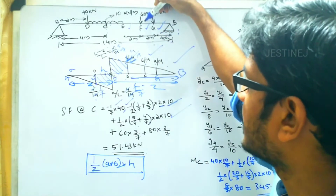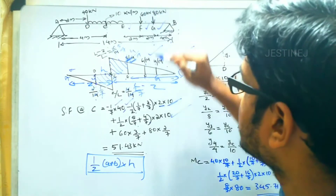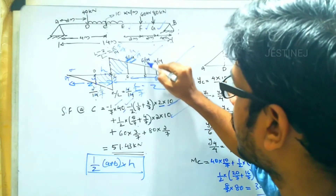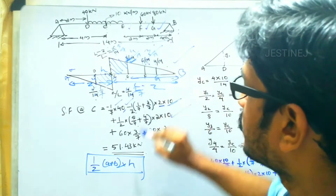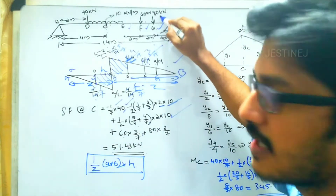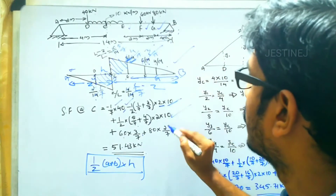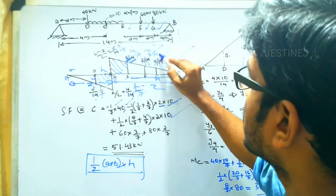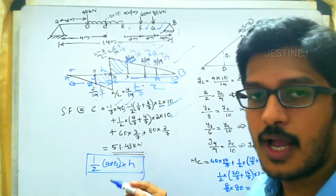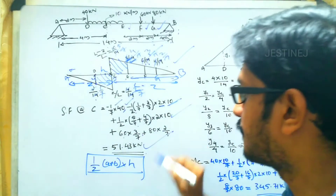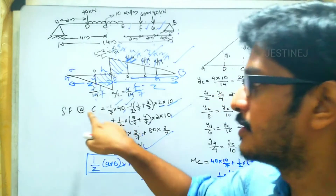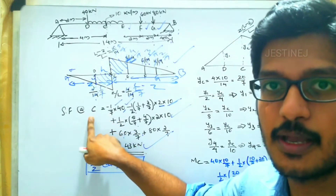At point F, where 60 kN acts, the ordinate is 6/14 = 3/7, giving a contribution of 60 × (3/7). At point G, where 80 kN acts, the ordinate is 4/14 = 2/7, giving 80 × (2/7). Adding all these values together, the shear force at C is 51.43 kN.